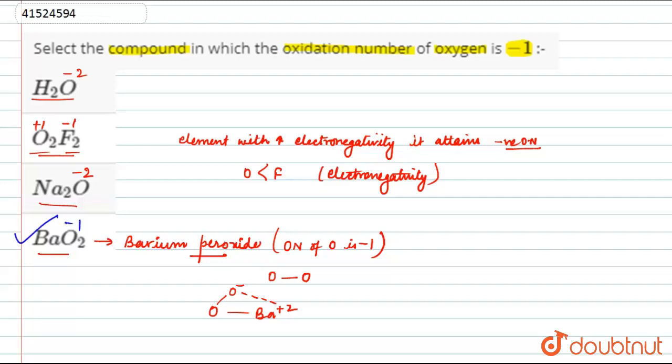So our answer is option D, which means the oxidation number is minus 1. So answer here is option D. Thank you for watching.